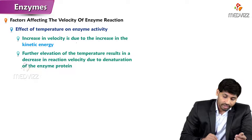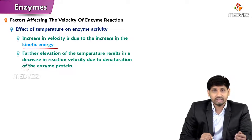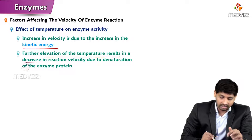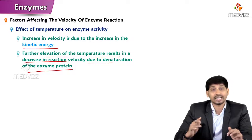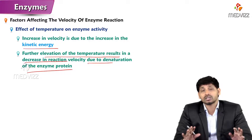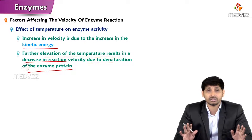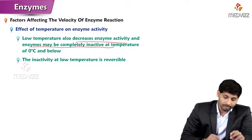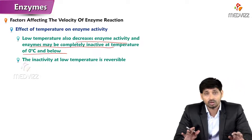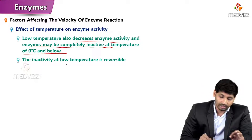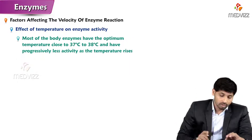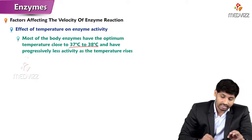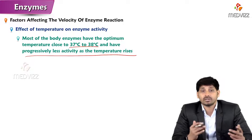Increase in velocity at higher temperatures is due to increase in kinetic energy, but further elevation results in decreased reaction velocity due to denaturation of enzyme protein, since proteins cannot tolerate high temperatures. Low temperature also decreases enzyme activity, and enzymes may be completely inactive at 0 degrees or below. Inactivity at low temperature is reversible. Most body enzymes have an optimum temperature of 37 to 38 degrees centigrade.